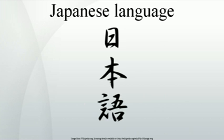Japanese emigrant communities, the largest of which are to be found in Brazil with 1.4 to 1.5 million Japanese immigrants and descendants, more than the 1.2 million of the United States, sometimes employ Japanese as their primary language. Approximately 12% of Hawaii residents speak Japanese, with an estimated 12.6% of the population having Japanese ancestry in 2008. Japanese emigrants can also be found in Peru, Argentina, Australia, Canada, the United States, and the Philippines, particularly in Davao and Laguna.